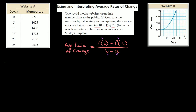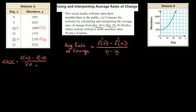So let's start with website A and calculate the average rate of change. It's going to be equal to F of B minus F of A. The problem asks to calculate the rates of change from day 10 to day 20, so we're going from day 10 to day 20. Those are our X values, so 20 would be B and 10 would be A. The average rate of change is equal to F of 20 minus F of 10, all over 20 minus 10.